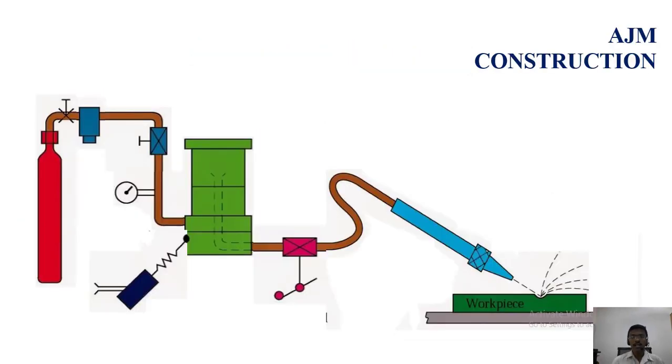Let me see the components for the construction of AJM. First one is compressor. Compressor is used to pressurize the gas. Next one is control valve. Control valve is used to regulate the pressure.